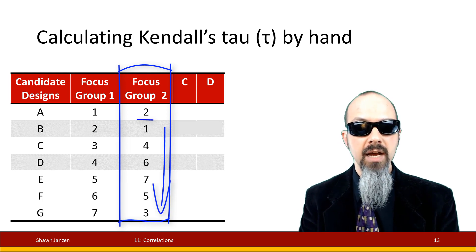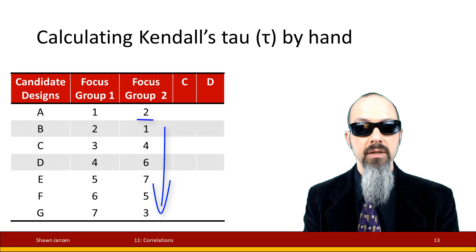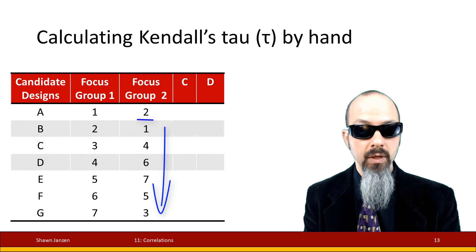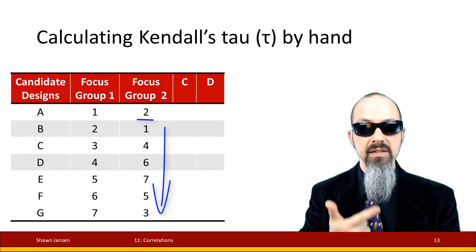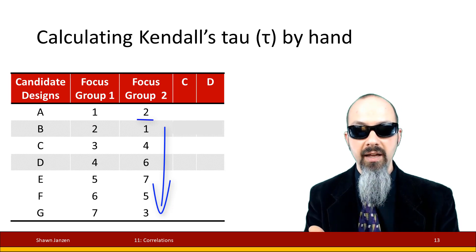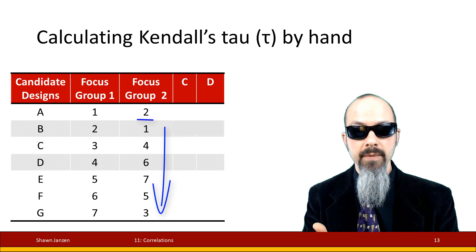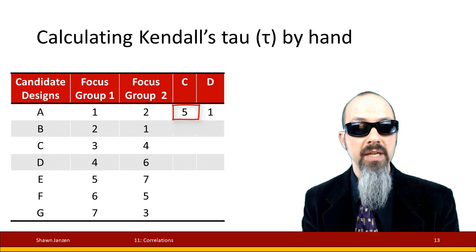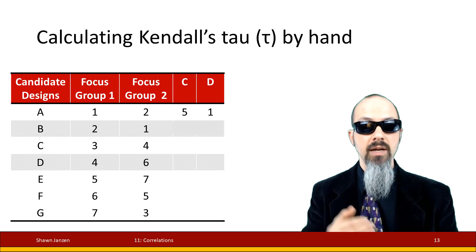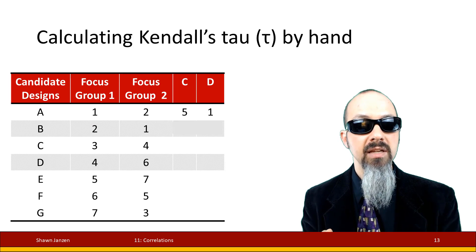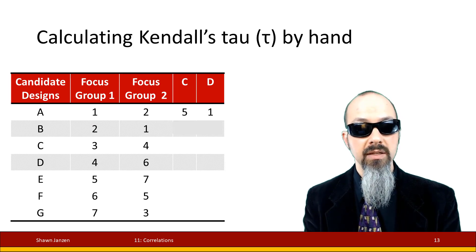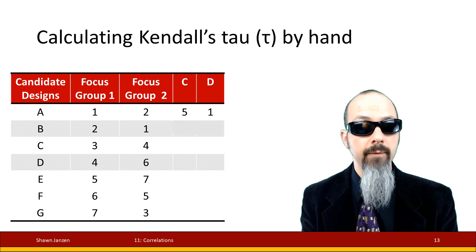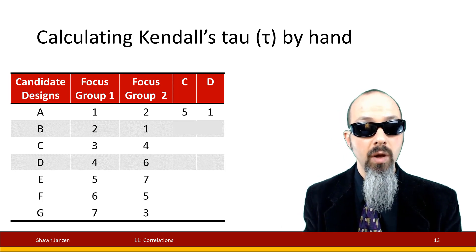For design A, focus group two gave it a ranking of two. Looking down the focus group two column from that two, I count how many rankings are larger than two. Going down I've got four, six, seven, five, three — all larger than two except one. So I put a five in that space for concordance. For discordance, the only thing smaller than two is one, and there was one there, so it's one. Five concordant, one discordant.